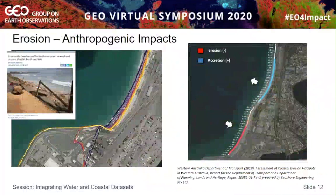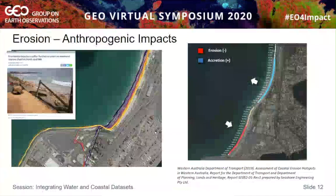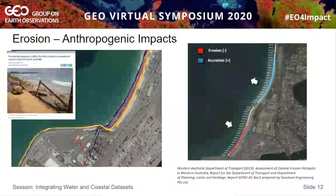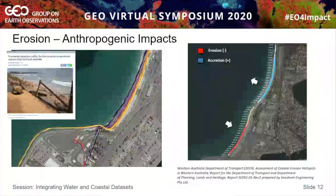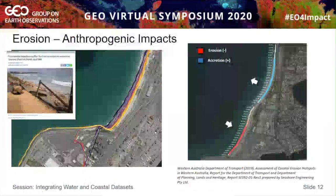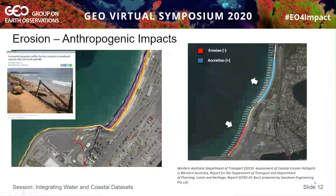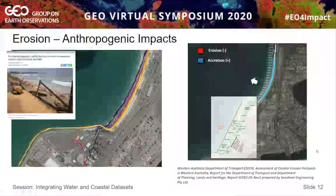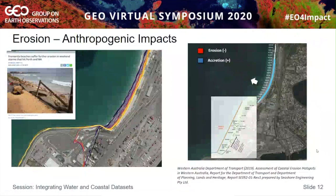Looking at some things we've seen in the dataset as we've moved toward publishing: the Western Australian Department of Transport recently released a hotspots report on coastal erosion across the state. One identified area was Port Beach near Perth, which shows erosion of almost two metres per year, very close to infrastructure and exacerbated by large climate events. To the southwest, the port has had land reclaimed in stages over time, with a clear correlation to the observed erosion effects. Our method successfully mapped erosion hotspots with very close correlation to the engineering-based analysis conducted by the Department of Transport.